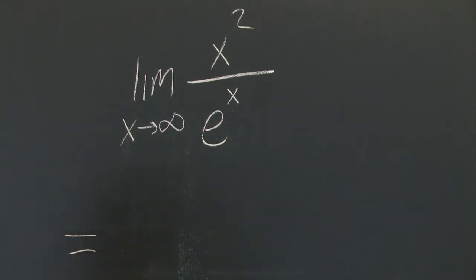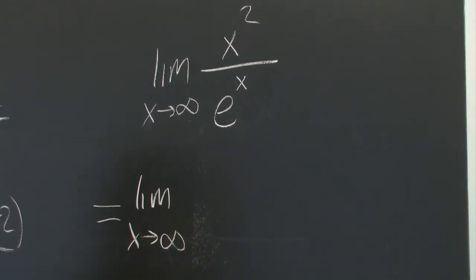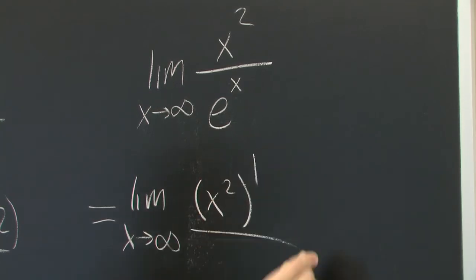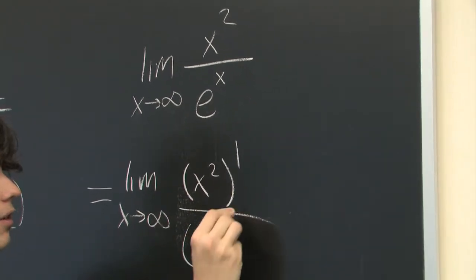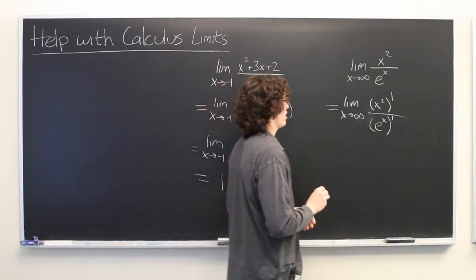then what you can do is take the limit of the derivative of the numerator over the derivative of the denominator. And these will be equivalent. Very handy.